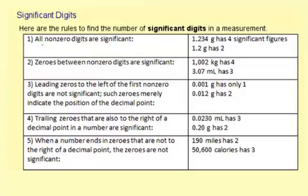Rule number one: all non-zero digits are significant. Here you can see 1.234 grams has four significant figures, and 1.2 has two. You can use significant digits and significant figures interchangeably.